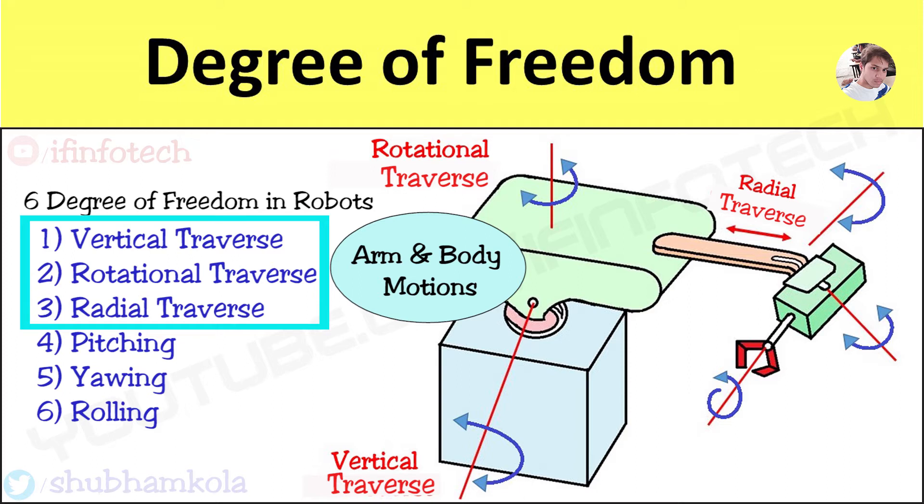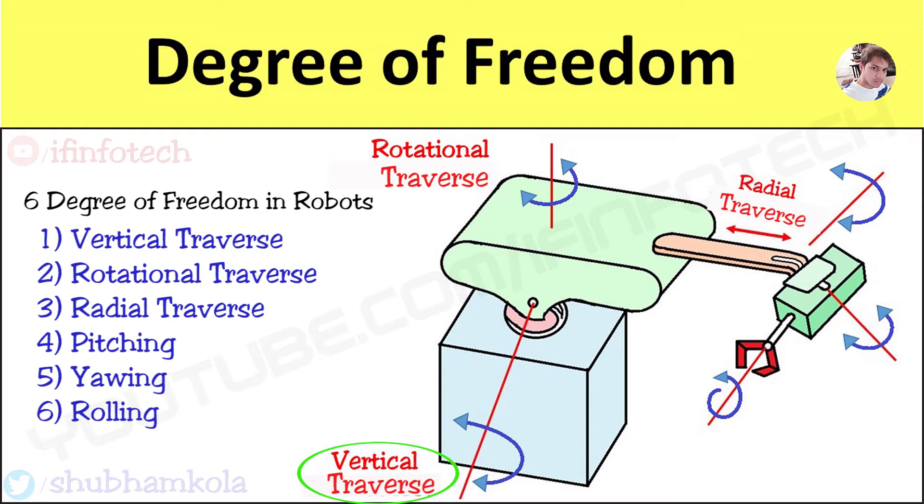First 3 motions are arm and body motions. In that, first is vertical traverse motion, which provides up and down motion to arm with the help of these linkages.